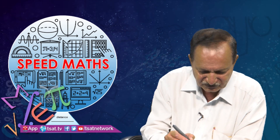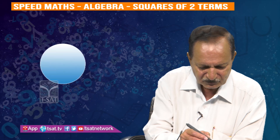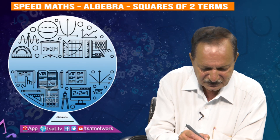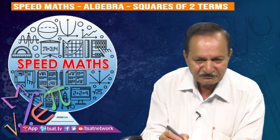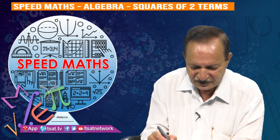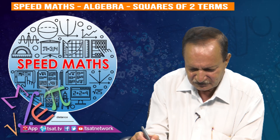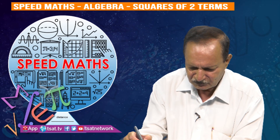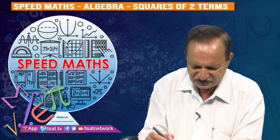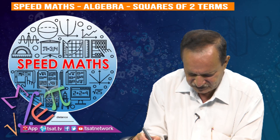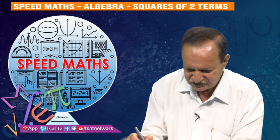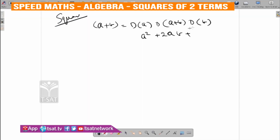First, A plus B whole square. The square of A plus B whole square: duplex of A is A square, duplex of AB is 2AB, duplex of B is B square. So A plus B whole square is equal to A square plus 2AB plus B square.